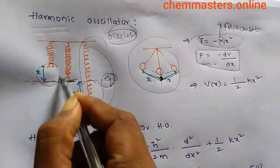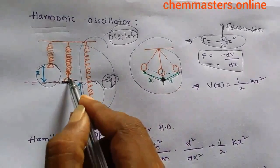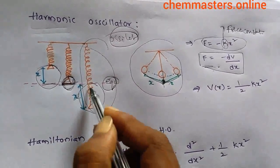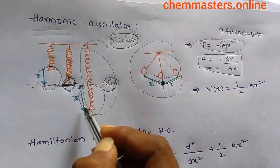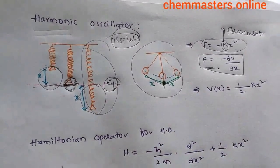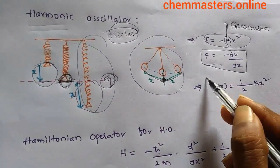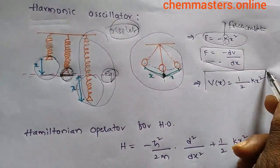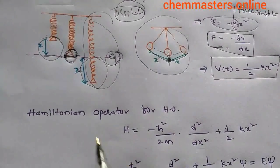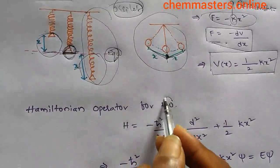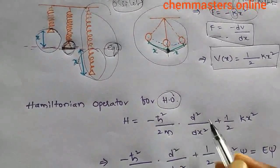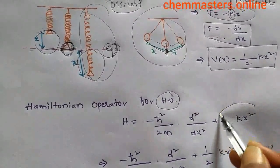The potential energy changes as displacement occurs from the equilibrium position. Therefore, the potential energy as a function of displacement x is given by V(x) = ½kx². The Hamiltonian operator for the harmonic oscillator is: H = −(ℏ²/2m)(d²/dx²) + ½kx², where ½kx² is the potential energy term.